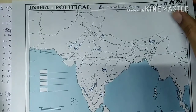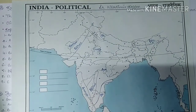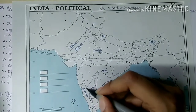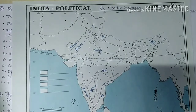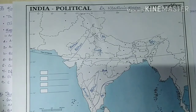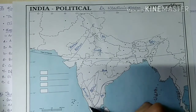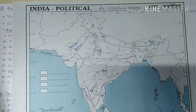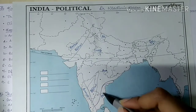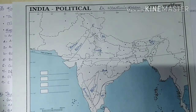Looking at Koppen's classification on the map, AMW — monsoon type with short dry winter — is found in the western coastal region south of Mumbai. This area receives over 300 centimeters of annual rainfall in summer from the southwest monsoon winds coming from the Arabian Sea side.